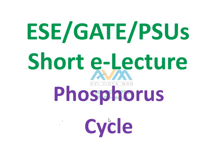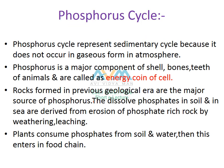Hello friends, welcome to ESC GATE PSU short e-lecture. Today in this video we are going to study about the phosphorus cycle. Nitrogen and oxygen can circulate through the atmosphere in the form of gas, but this doesn't happen in the case of phosphorus. Therefore, the phosphorus cycle represents a sedimentary cycle because phosphorus does not occur in the atmosphere in the form of gas.